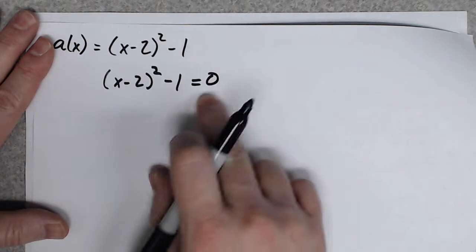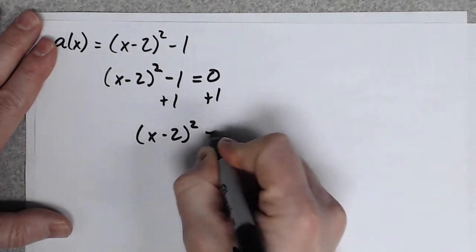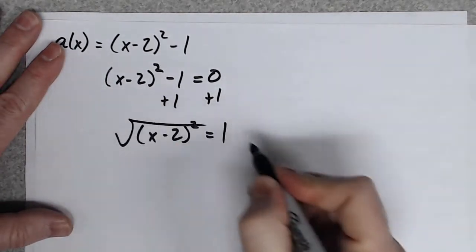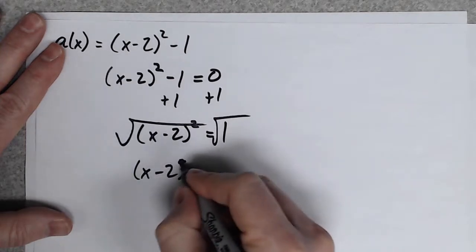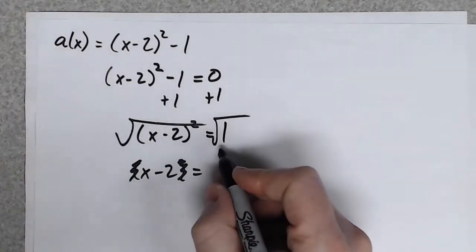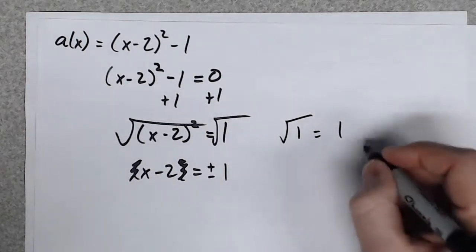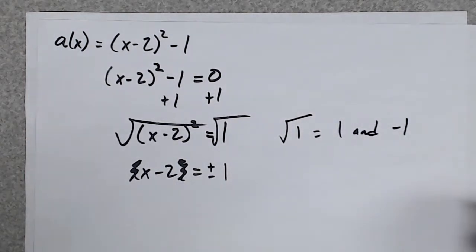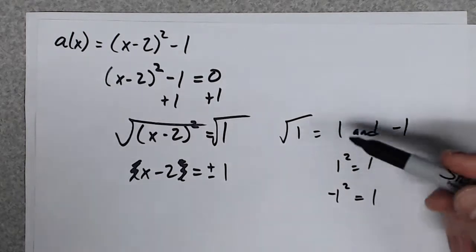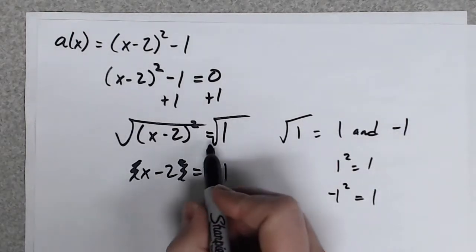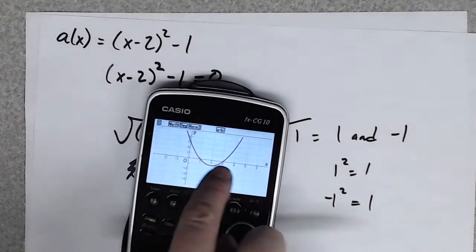Solve just like last time — I move the constant over by subtracting it from both sides. Then take the square root to get rid of the power of two. What's the square root of one? It's plus and minus one — because one squared is one and negative one squared is also one. Whenever you take a square root you always get a plus or minus, and that's how we get two answers.